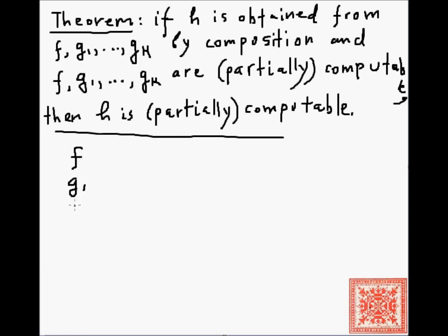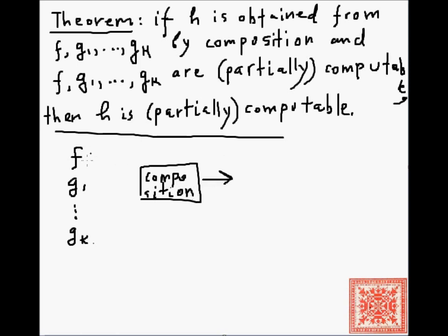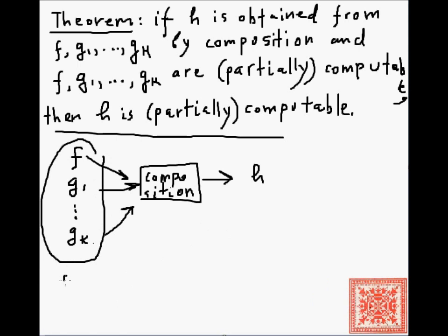So let's think about what it means. We have f, g1 through gk, and then we have a constructive device: composition. That constructive device receives all these functions and produces a new function h. If these functions happen to be partially computable, then composition preserves computability — h is guaranteed to be computable. If all the components out of which we are composing h are computable, then composition preserves computability.